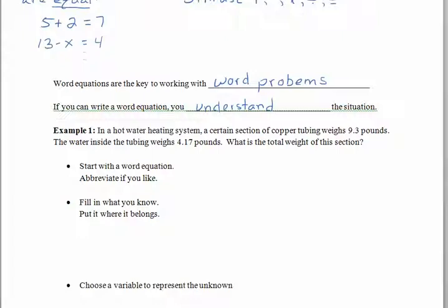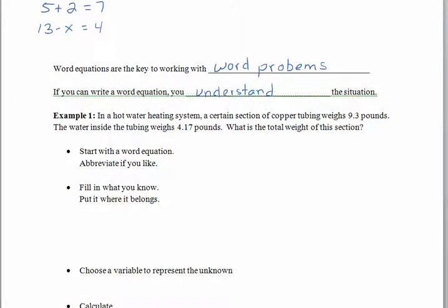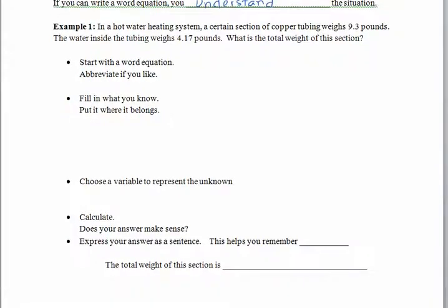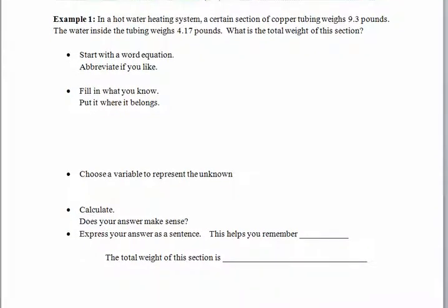We have a hot water heating system where a certain section of copper tubing weighs 9.3 pounds, the water inside the tubing weighs 4.17 pounds, and we'd like to know the total weight of the section. So the first thing we want to do is start with a word equation. We'll abbreviate or we could just write a few words down. It's called a word equation.